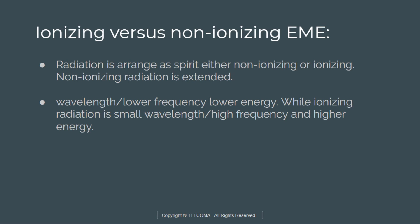Radiation is basically arranged as a spectrum, either non-ionizing or ionizing. Non-ionizing radiation is further characterized by large wavelength and lower frequency energy, while ionizing radiation has small wavelength, high frequency, and higher energy.